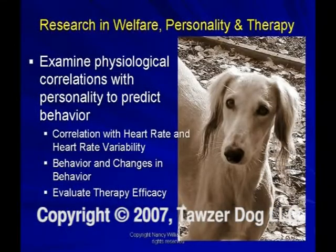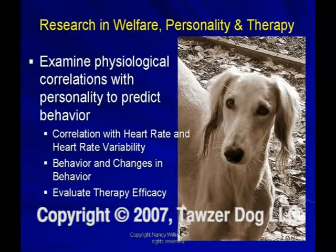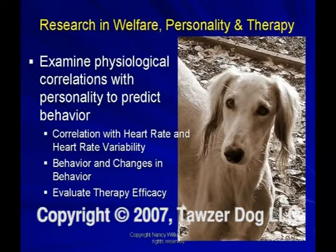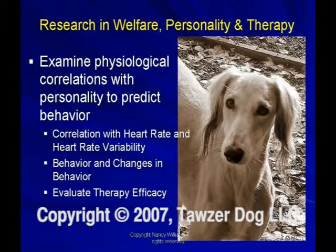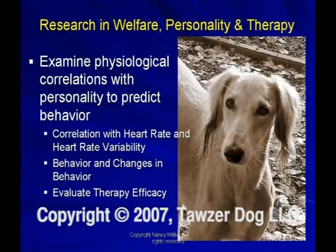I'd like us to start using signs to examine the physiological correlation. We're not talking about cortisol — that's a whole other study. We think heart rate is probably easier and more predictive: can we predict how a dog will react to situations based on what his heart does? We found a correlation in our research with not only the heart rate, but also the variations between beats. We found a change in behavior as we do therapy — when dogs come back, their heart rates tend to stay lower, which has helped me evaluate the therapies I'm doing with these dogs.